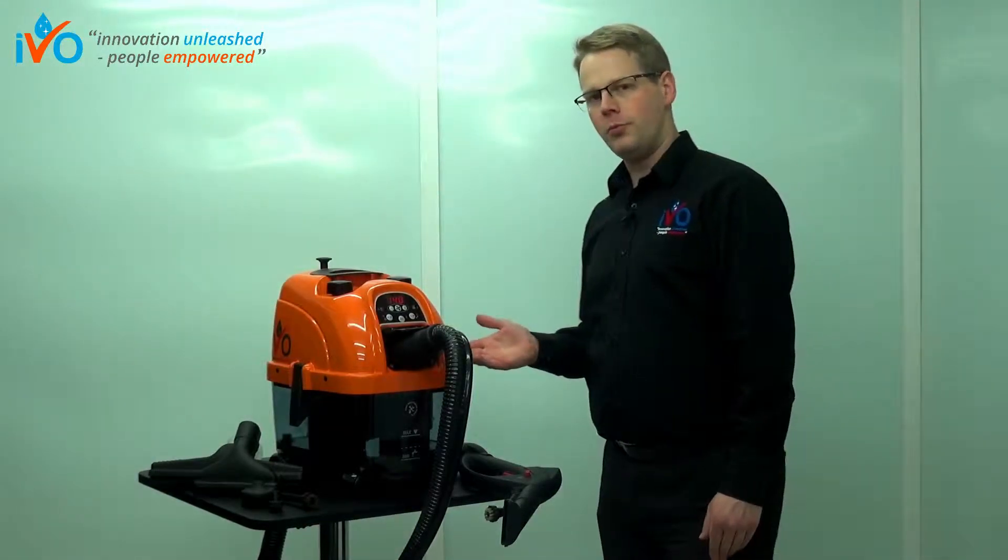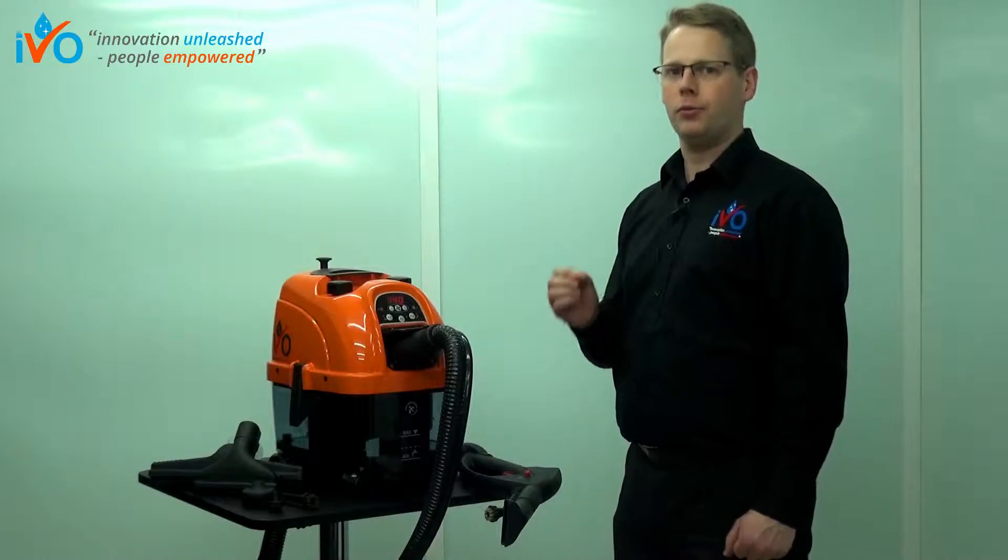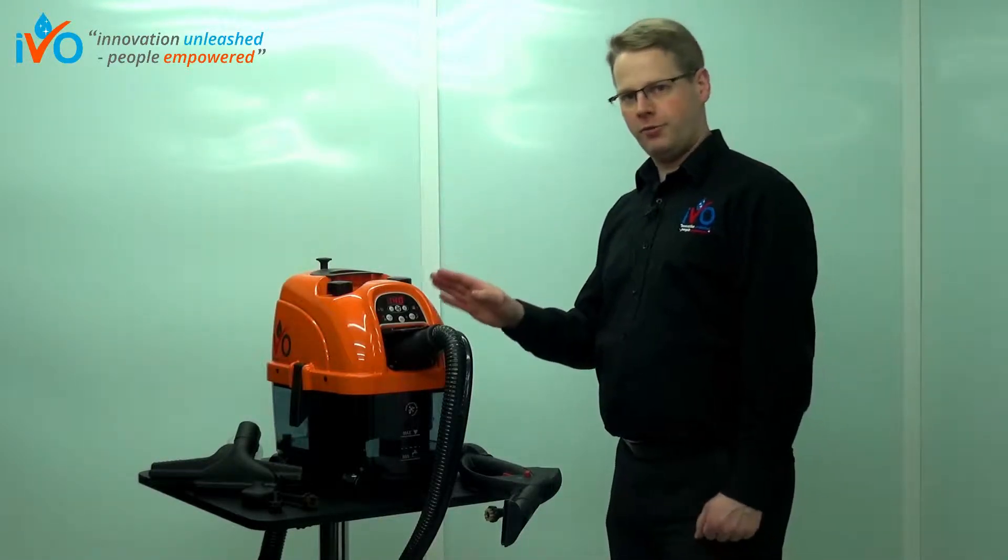Now using detergent with steam does what? It gives you much better cleaning power. One problem with steam is while it's really great at sanitizing and can be pretty good at cleaning, sometimes it lacks that edge at cleaning out the really dirty stuff. Now with the detergent you get that edge and that's only available with the iVo machines, and it's a brilliant feature.